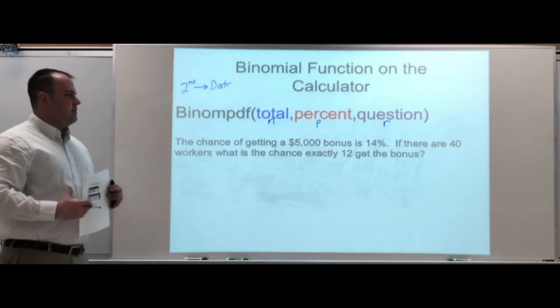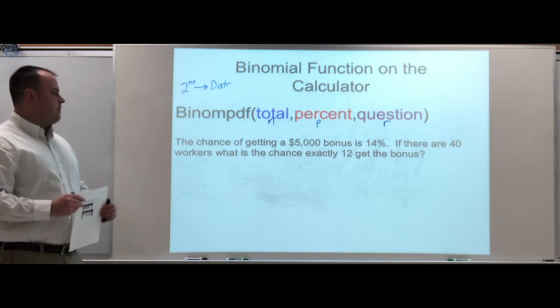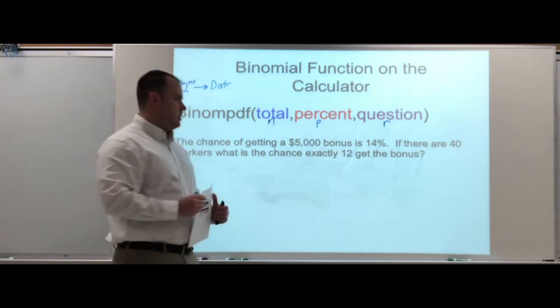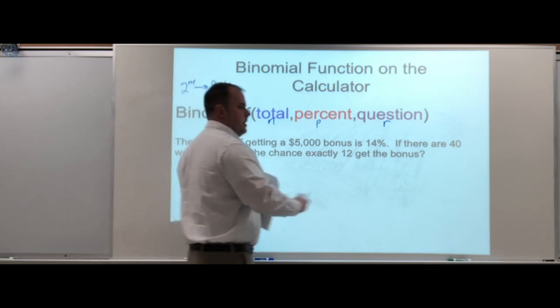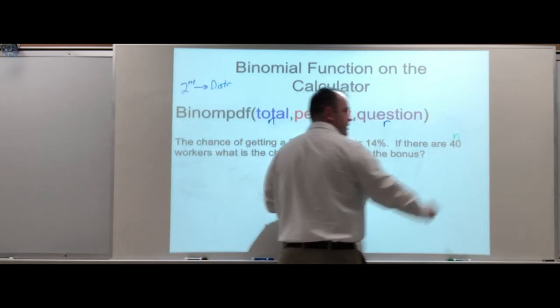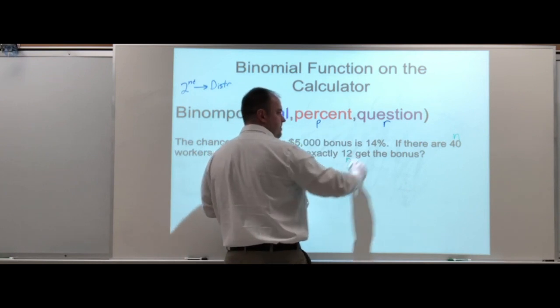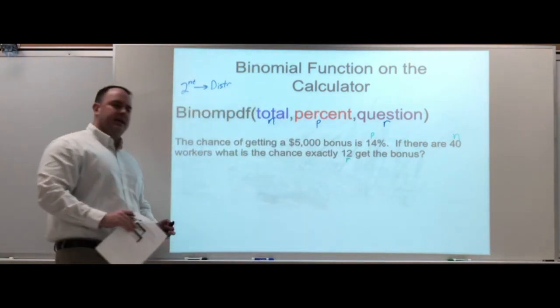The example we have here: the chance of getting a $5,000 bonus is 14%. If there are 40 workers, what is the chance exactly 12 get the bonus? So going through here, we have n is 40, total number of workers, r is 12, and our p is 14 percent.